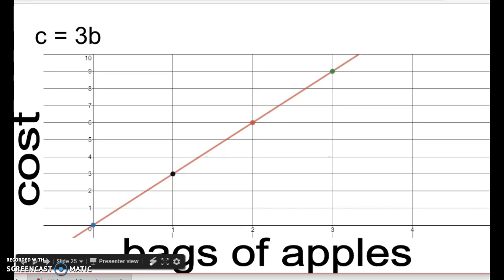So here's our graph. You can see the cost goes up to the left and the number of bags of apples is going across left and right. We have our equation cost equals their constant of proportionality 3 times the number of bags B. So if I have one bag, it costs $3.